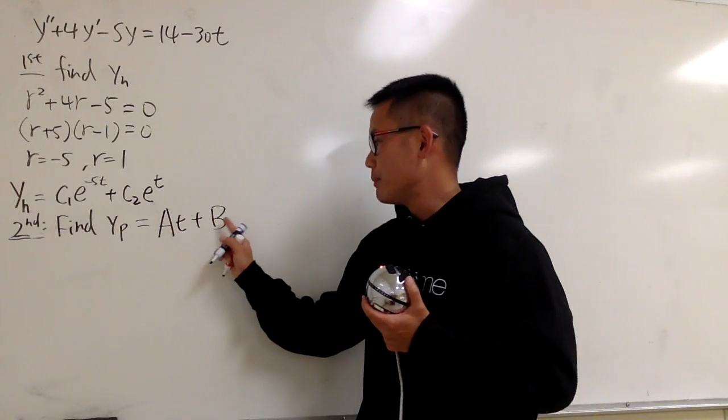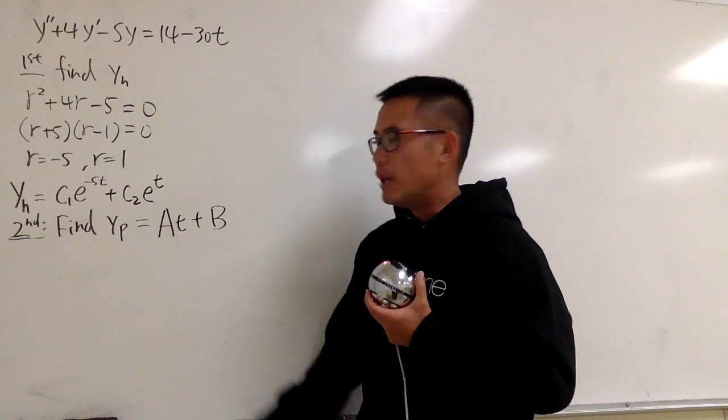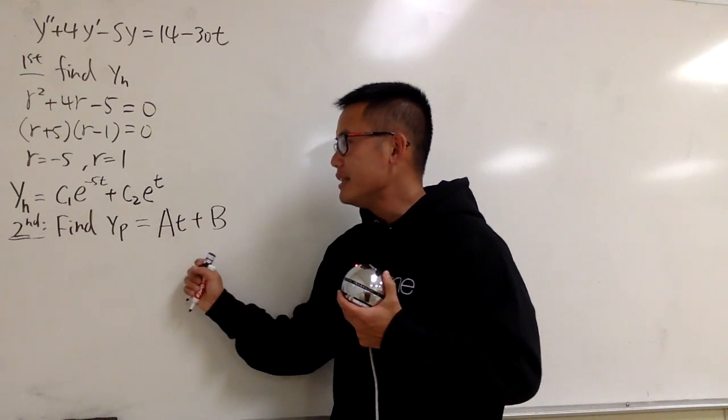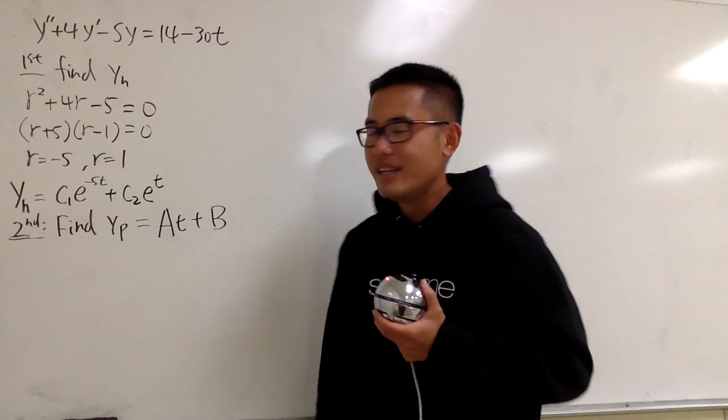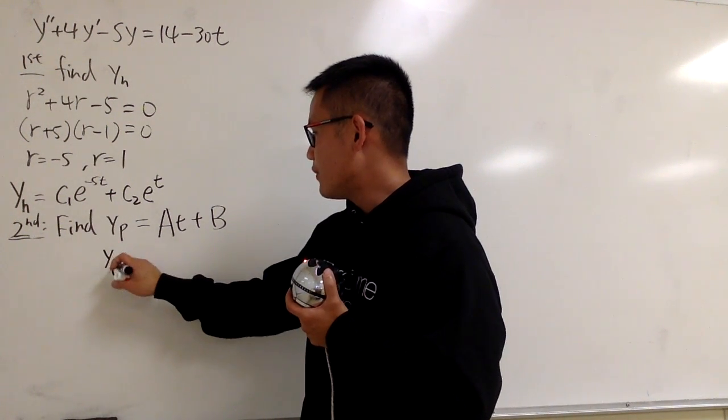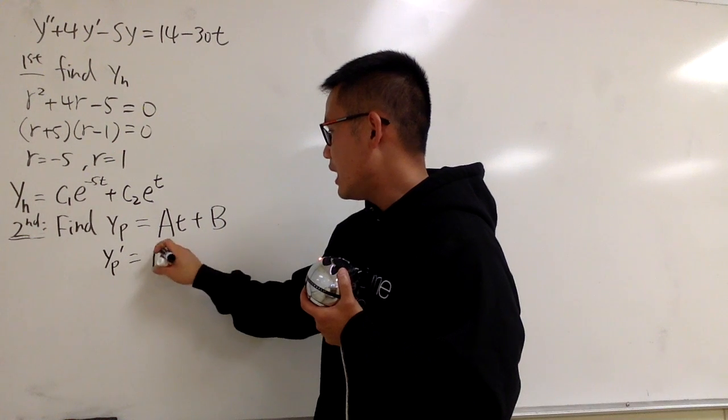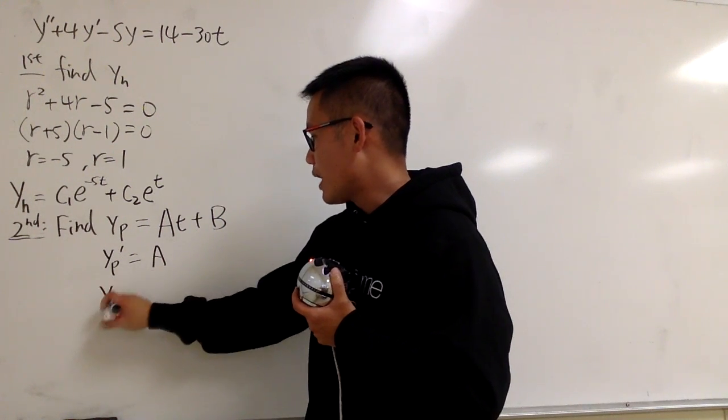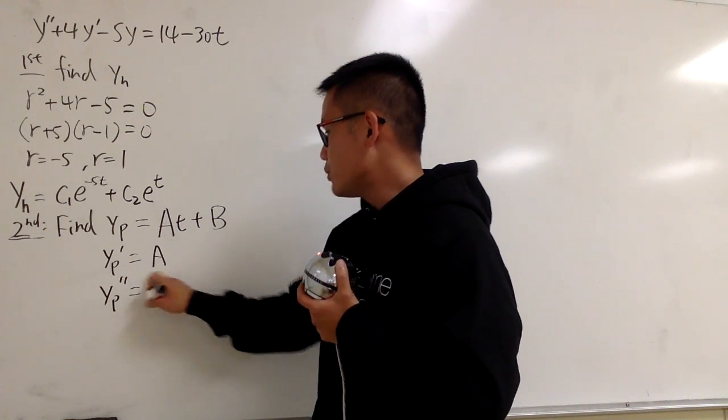At plus B times no t. And you see, this right here, it's linearly independent than yh, so this is enough. Anyways, so this is yp, and then I will just go ahead and differentiate that. I will get A, and I'll differentiate this again, yp double prime, which will be zero.